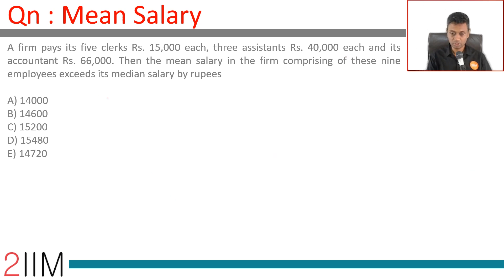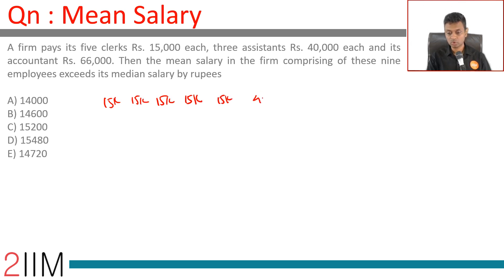Now we need to find the median. List all salaries in ascending order: 15k, 15k, 15k, 15k, 15k, 40k, 40k, 40k, 66k.